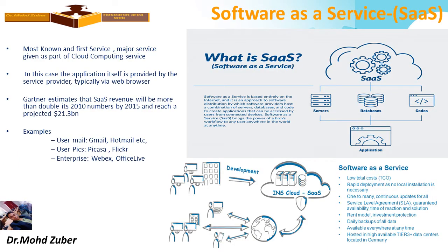Software as a Service is software distributed entirely on the internet. It is an approach to software distribution by which a software provider hosts a combination of servers, databases, and code to create applications that can be accessed by users from connected devices. SaaS features include low total cost, rapid deployment, no local installation necessary, one-to-many model, continuous updates, daily backup of data, and available everywhere at any time.